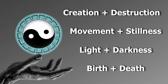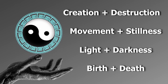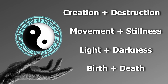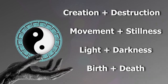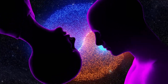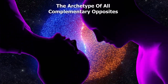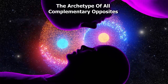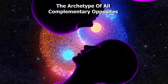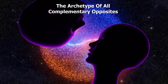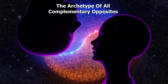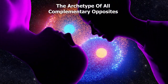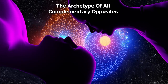Everything is a part of yin, a part of yang, and it's the dance between the two that actually holds everything together. In this way, yin yang is actually the archetype of all the complementary opposites in the universe — like male and female, light and dark, and so on. We'll get more into what complementary opposites actually means later on, but right now we're going to get more into the diagram itself.